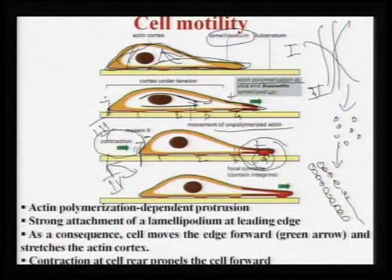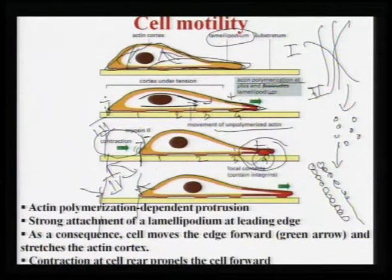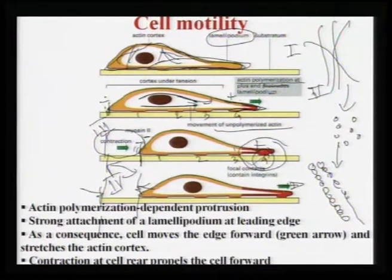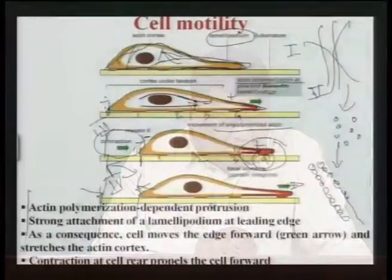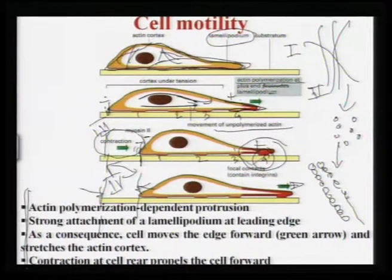In stage 4, the cells have moved from one place to another — several microns — and the cells are migrating along the arrow direction on the substrate. A cell can move in a unidirectional, straight-line manner, or it can change track, turning 90 degrees or some other degree, and can also move in a zigzag fashion.